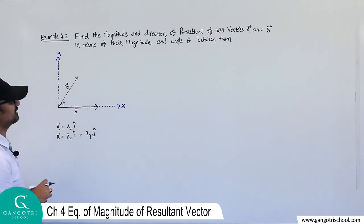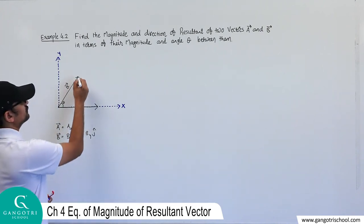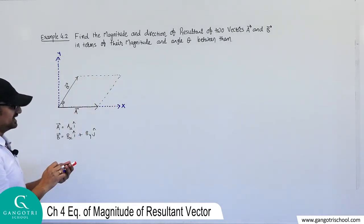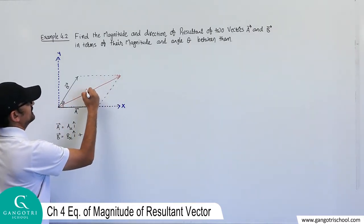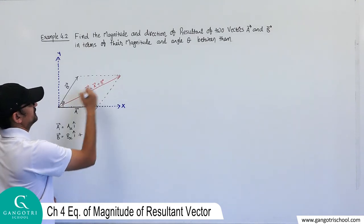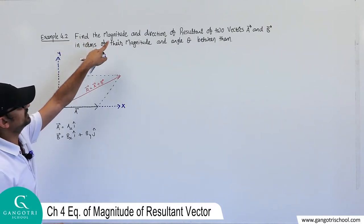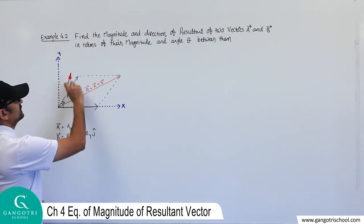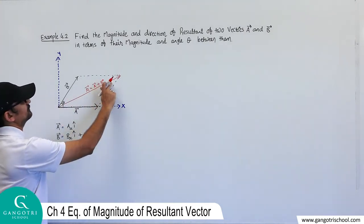According to the parallelogram method, vectors A and B are connected tail-to-tail. Complete the parallelogram and draw the diagonal — the diagonal gives you the resultant vector R. So R is the resultant of vector A plus vector B. We would like to find the magnitude and direction of this resultant vector.